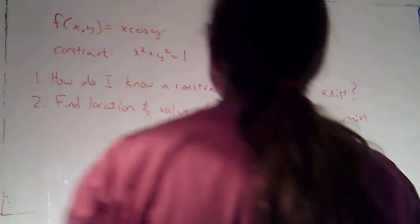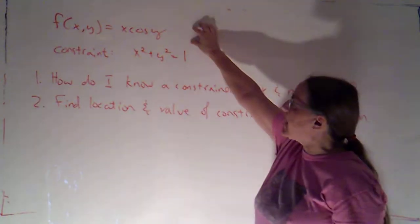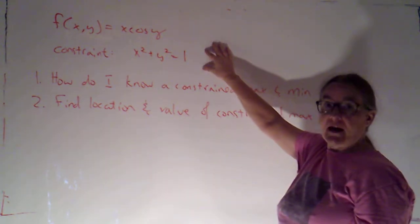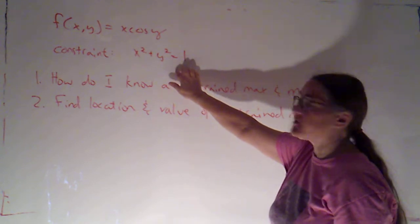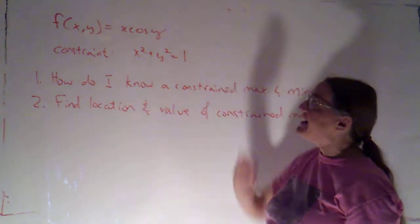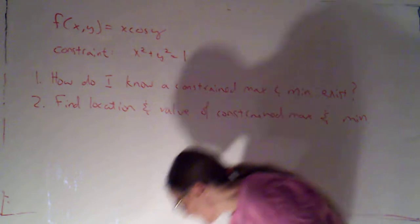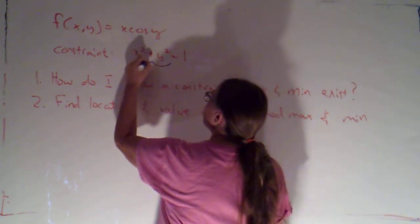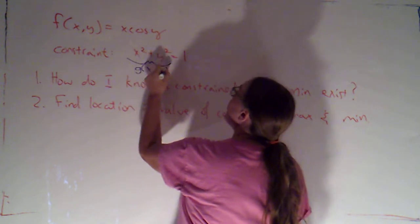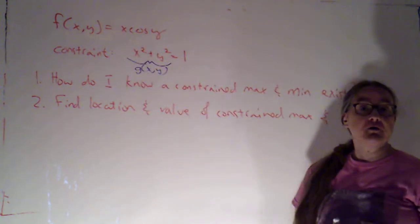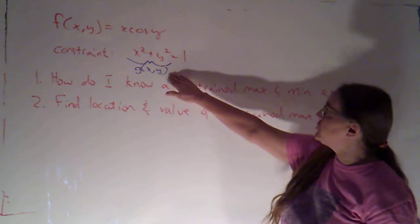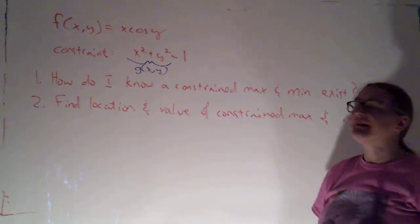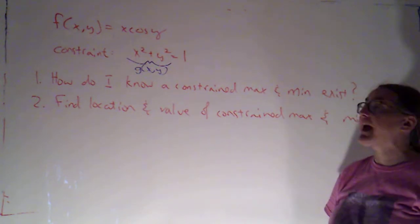I've got a problem up here on the board. We've got a function of two variables: f of x, y is x cosine y. We've got a constraint — the unit circle. So we're going to restrict the domain of our function to just being points on the unit circle. Notice the unit circle is a level curve for a different function of two variables. If g of x, y is x squared plus y squared, then the unit circle is a level curve for that function.